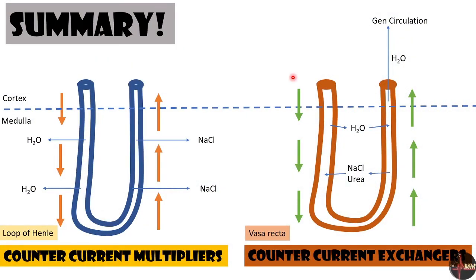I hope you like this video. To summarize: the loop of Henle is a counter current multiplier because of its bent loop shape. The ascending limb pushes solutes into the medulla, and the descending limb pushes water out. That water is reabsorbed with the help of the vasa recta into the general circulation, while sodium chloride and urea are recirculated because of the slow blood flow in the vasa recta. The vasa recta is a perfect counter current exchanger. See you with more interesting videos. Thank you for watching MedManus.